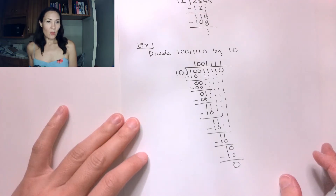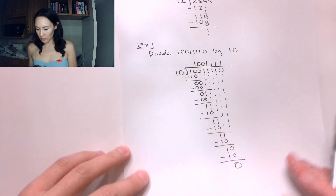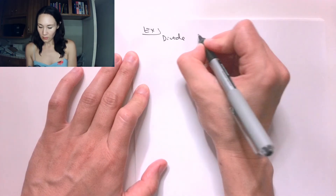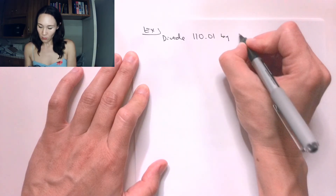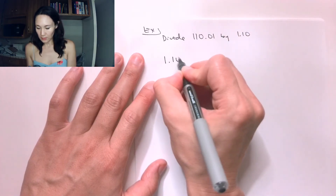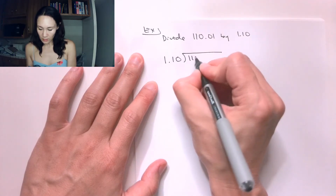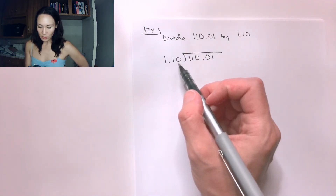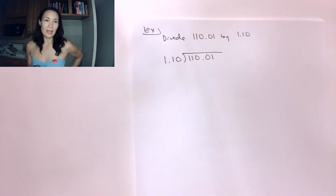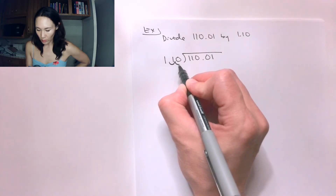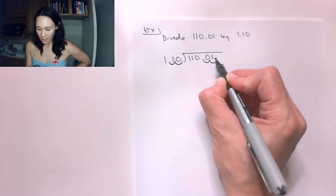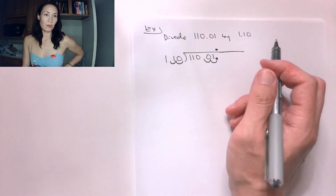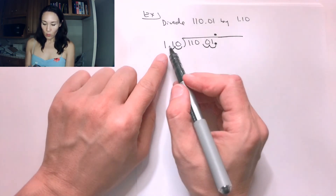Now I want to show you another example doing binary long division, but with floating point numbers. So let's see how this is different. Suppose we want to divide 110.01 by 1.0. Let's set up the long division: 1.0 goes outside, and on the inside goes 110.01. Just like when we first learned this, we move our decimals over first. So I'm going to move the decimal place over 1, 2 positions. I move this decimal place over 1, 2 as well. So my answer is also going to be in floating point form. Now I have 110 going into 110.